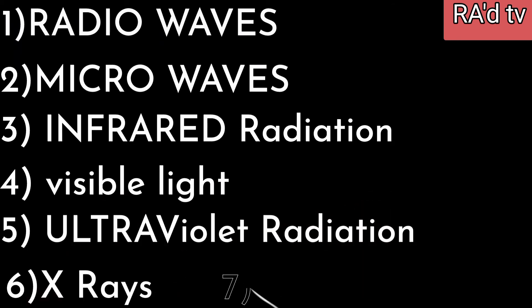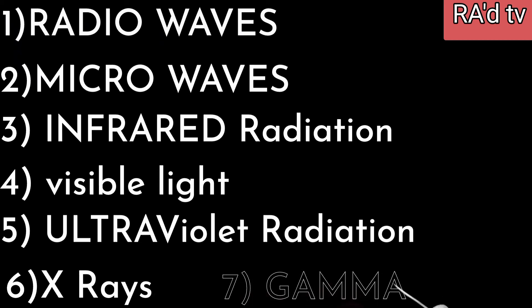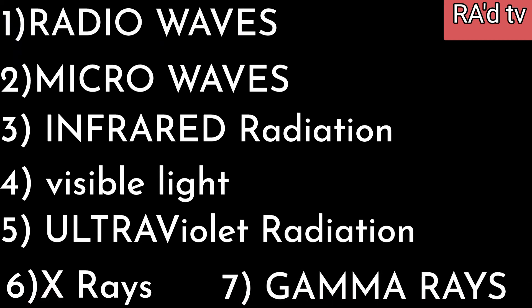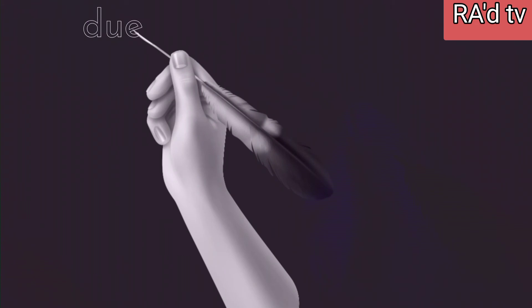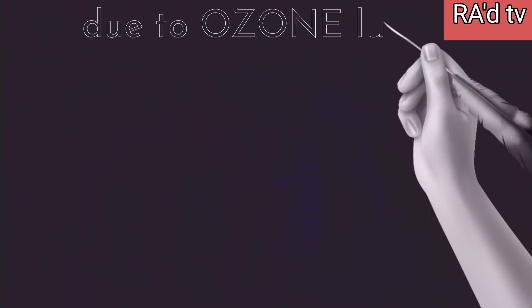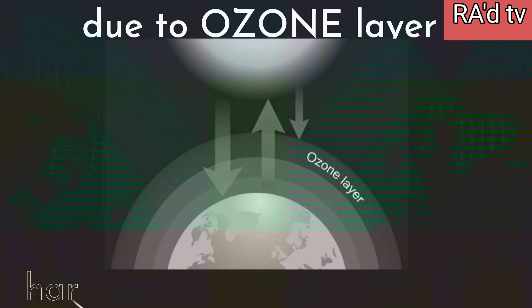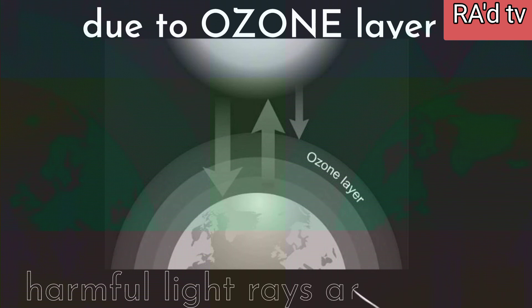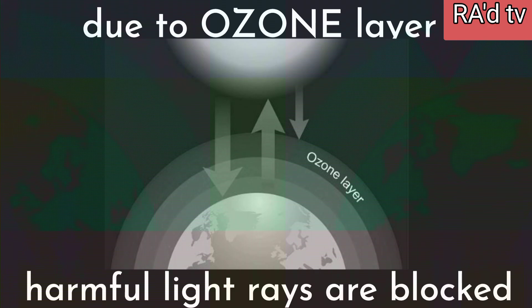The fifth one is ultraviolet radiation, sixth one is X-rays, and seventh one is gamma rays. Due to the ozone layer, some of the harmful electromagnetic radiation are prevented — they are not entering into the world because of the ozone layer.